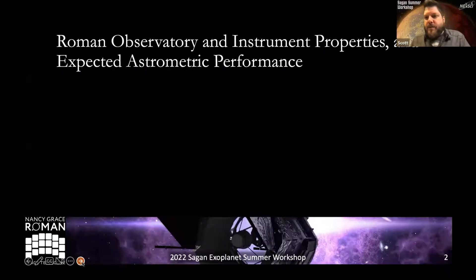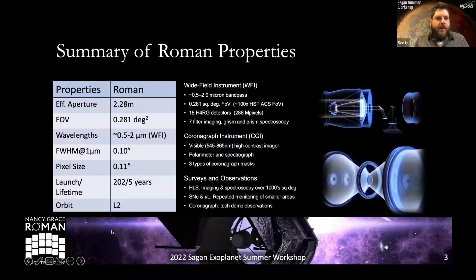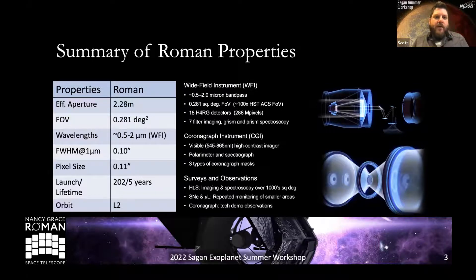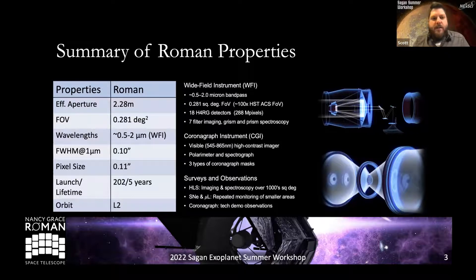Let me talk a bit about Roman for those unfamiliar with it. It's NASA's next flagship mission following JWST. Roman has basically the same aperture as Hubble — about 2.4 meters, although the effective aperture is smaller due to obscurations. It has a field of view of 0.281 square degrees, which makes it unique from Hubble with its much larger instantaneous field of view. The wavelength range is mid-optical to near-infrared, 0.5 to 2 microns for the wide field instrument. The FWHM at one micron is diffraction limited at 0.1 arc seconds.